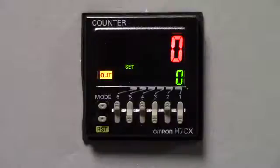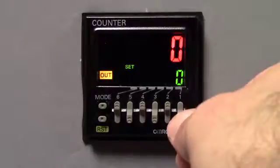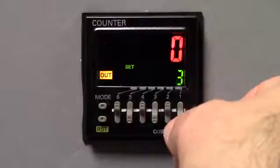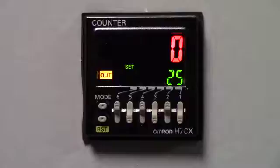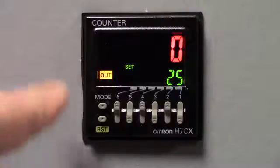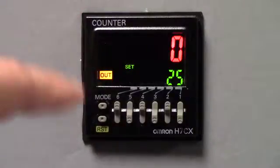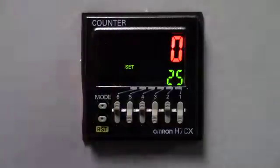So what we are going to do, we are going to put the process value at zero and the set value we are going to place at 25. If you notice the output light is still on and that's fine. We will clear it and the only way you can clear that output light when you are programming the H7CX-N is when you have a set value in and now you can hit the reset. So now you cleared it out. So now we're ready to go.